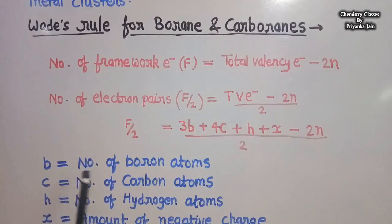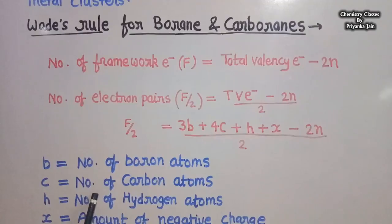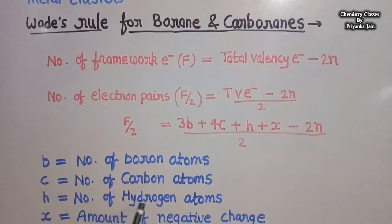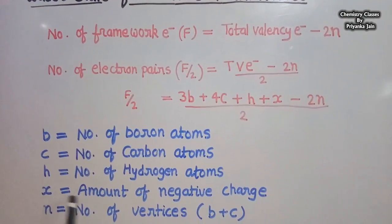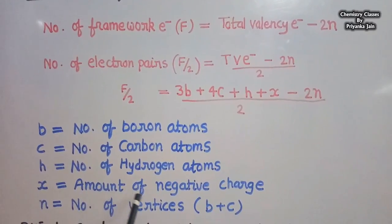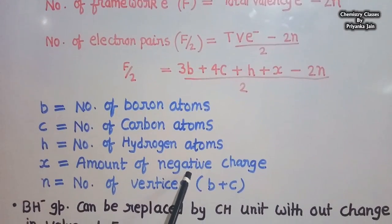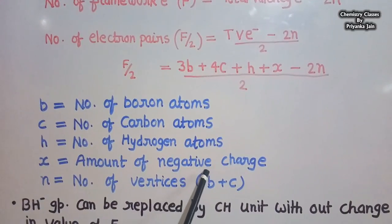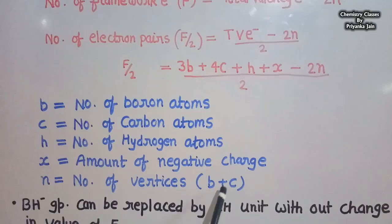To clarify the variables: B is the number of boron atoms, C is the number of carbon atoms, H is the number of hydrogen atoms, X is the amount of negative charge (taken with a plus sign), and N is the number of vertices, which equals B plus C.